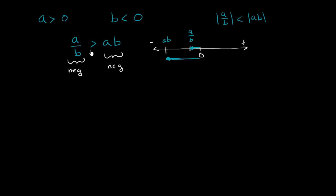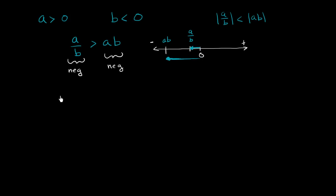Let's multiply both sides by b. b is less than 0. So if you're multiplying both sides of an inequality by something less than 0, it swaps the inequality.